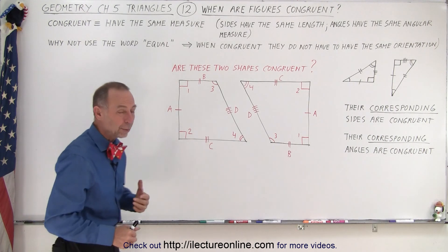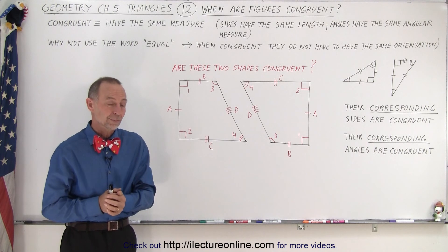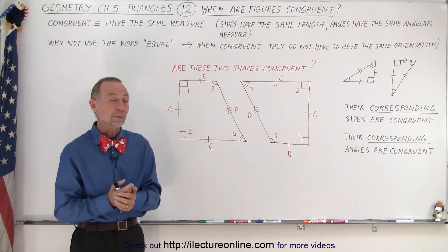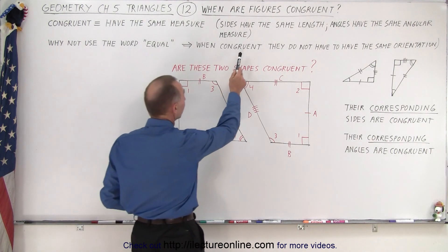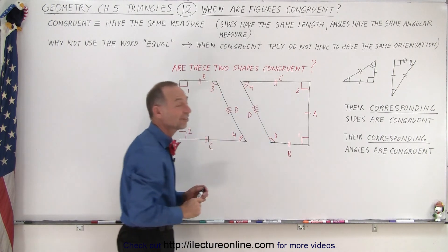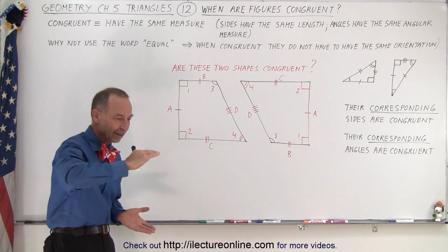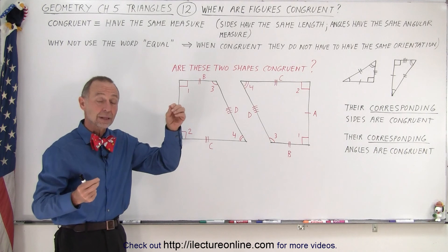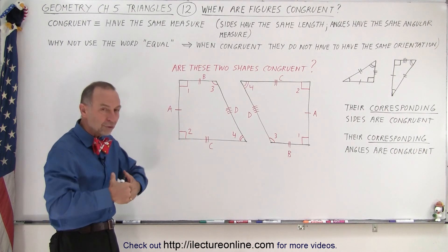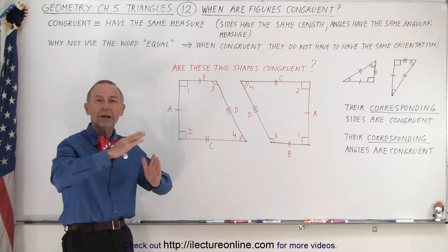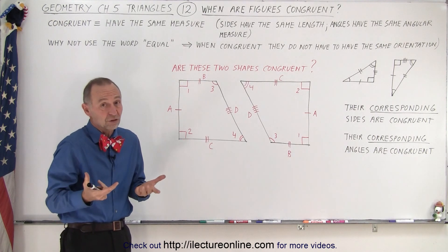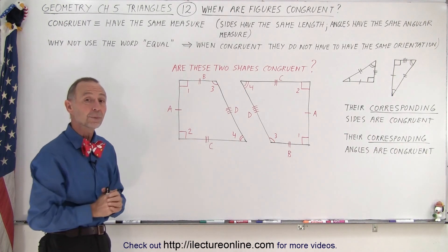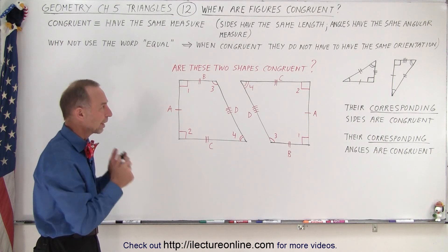Notice we don't use the word 'equal,' which is what we're used to in algebra — the left side equals the right side means they're identical. So why use congruent and not equal? The difference is that when things are congruent, they don't have to have the same orientation. They can be oriented differently, making it more difficult to see if they have the same length or angular measure. We could say they are equal if they're oriented exactly the same way, but congruent is the word we use for that particular purpose.